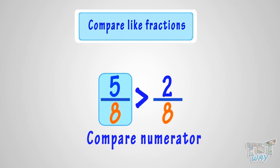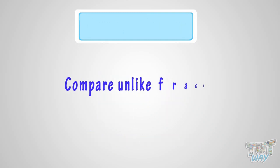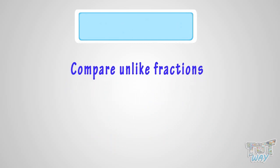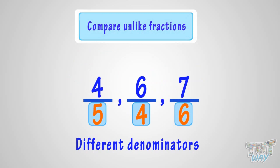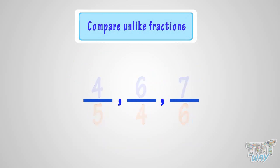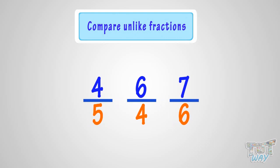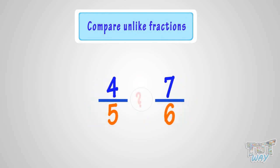Now, let's see what unlike fractions are and how we can compare them. Fractions that have different denominators are called unlike fractions. These are all examples of unlike fractions. If two fractions have different denominators — that is, if they are unlike fractions — it is difficult to determine which fraction is larger.